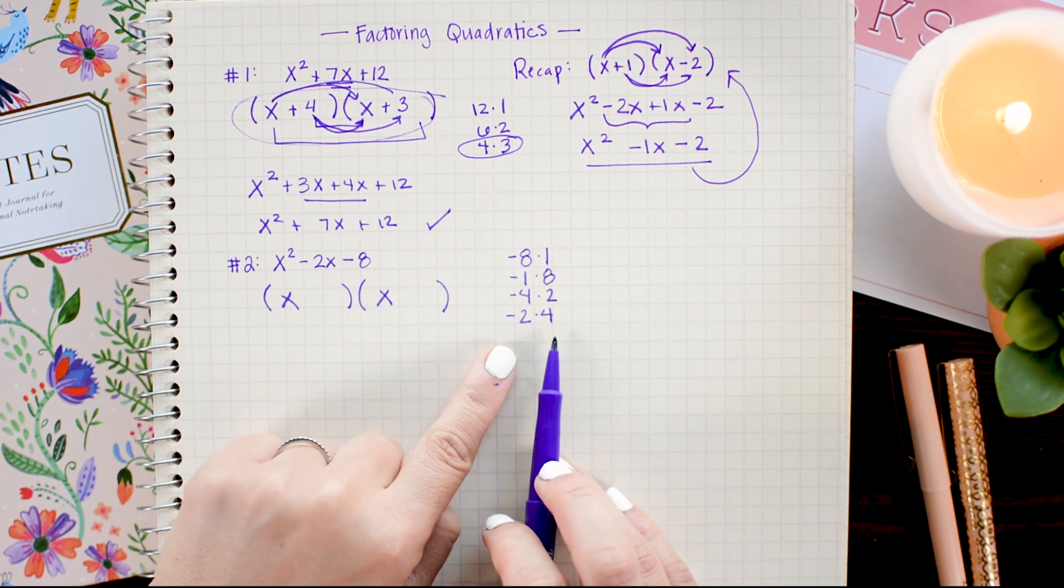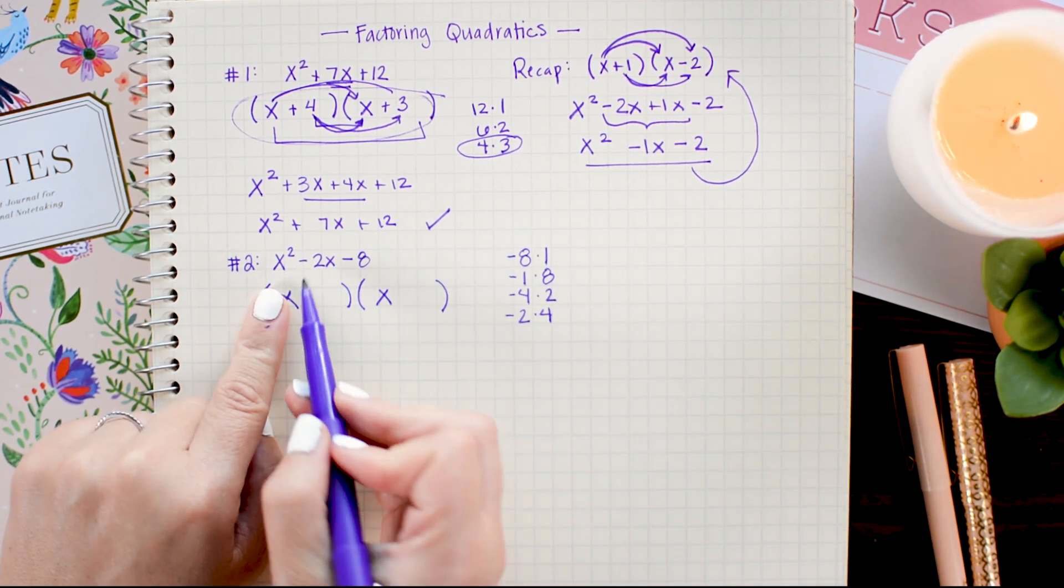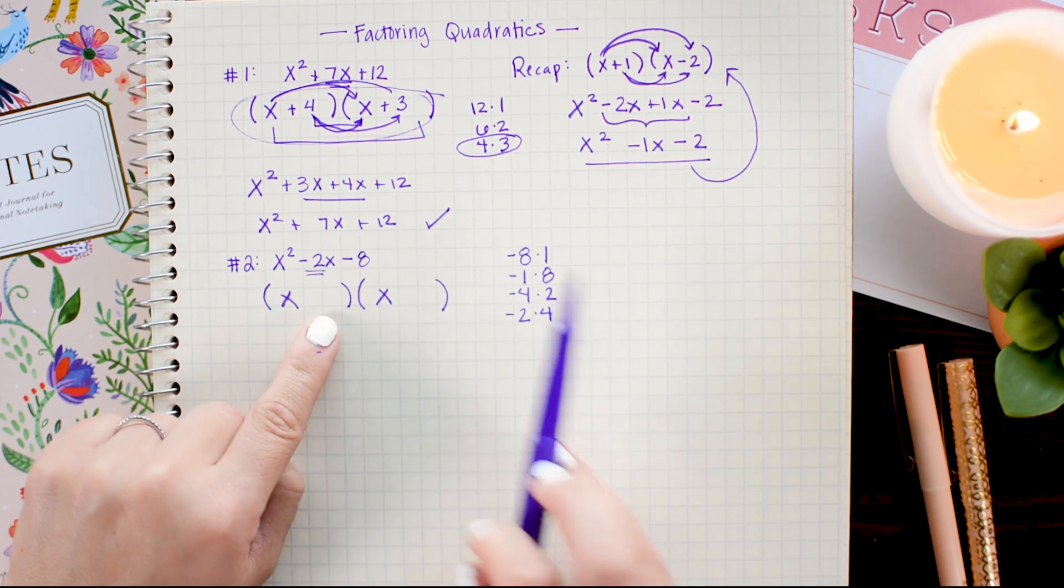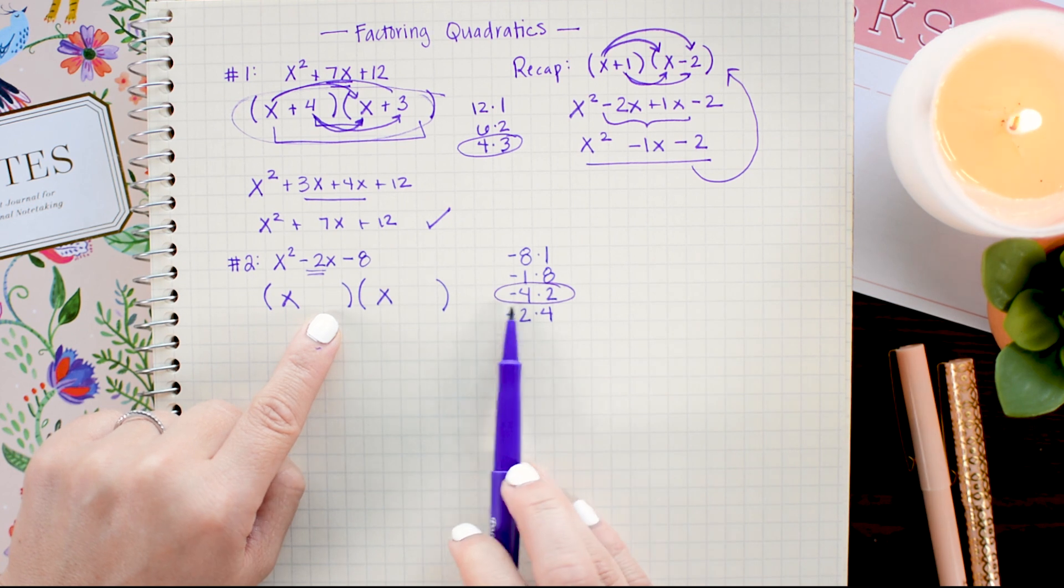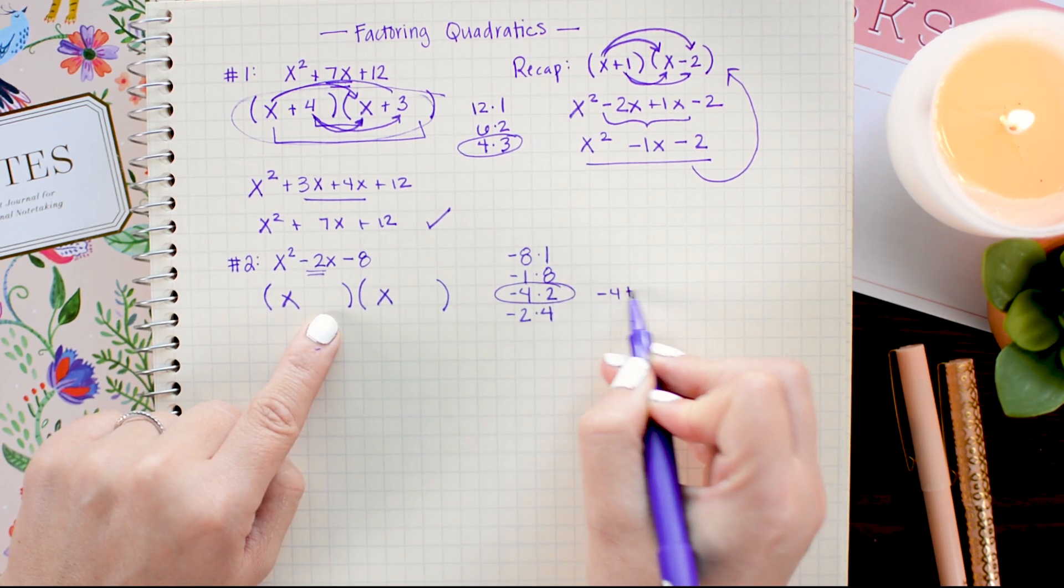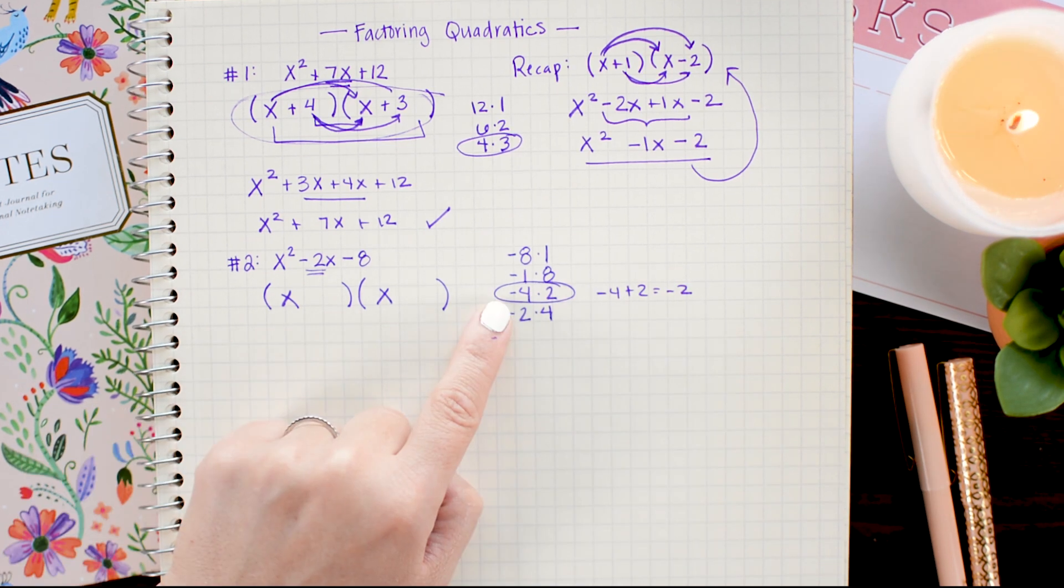Now out of these potential factors, I'm looking for the 2 that add to negative 2. So we get here, negative 4 plus 2 is negative 2. So those are the 2 that I want to use. And the negative sign is going to translate into a minus symbol.